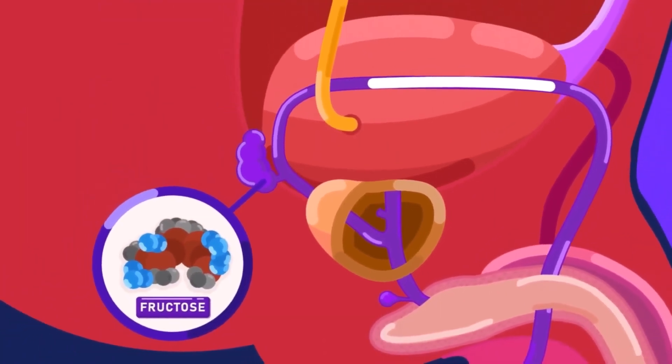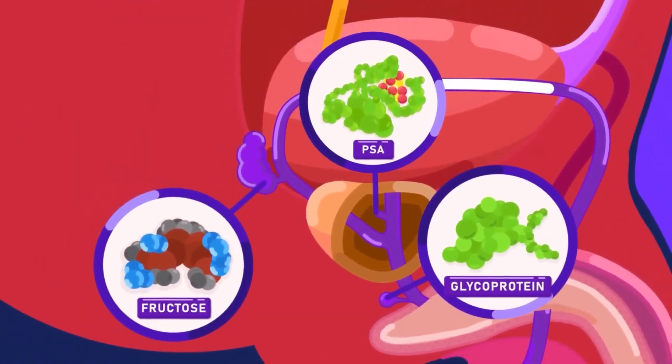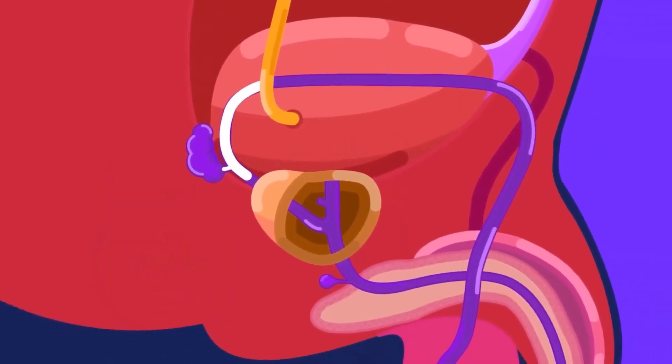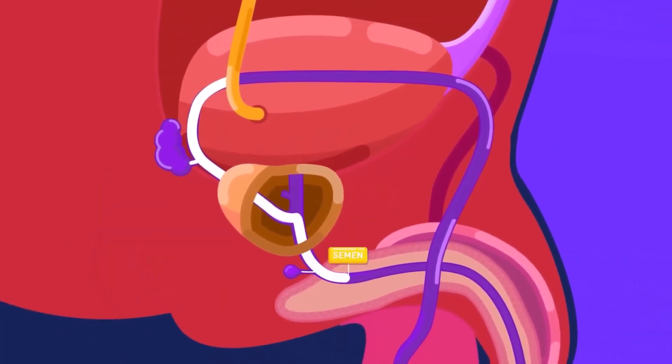The seminal vesicle, the prostate, and the cowper's gland secrete a slippery fluid that mixes with the sperms called seminal fluid or semen.